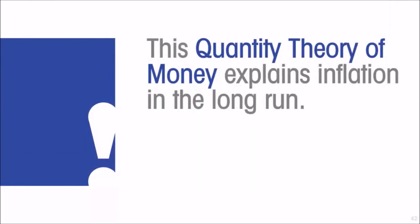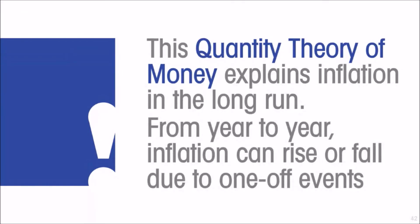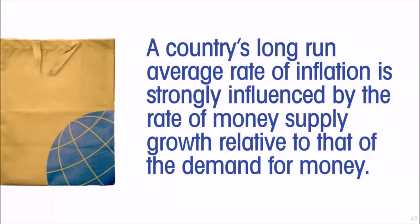This explanation is called the quantity theory of money, and it is appropriate for explaining inflation in the long run. If we want to understand why, over a twenty-year horizon, some countries have higher inflation rates than others, it doesn't help you understand why inflation might be higher or lower in any given year — changes from year to year can be due to many one-off events. Here we are trying to understand why persistent inflation is different across countries. A country's long-run average rate of inflation is strongly influenced by the rate of money supply growth relative to that of the demand for money.